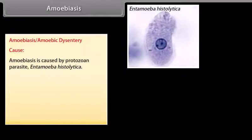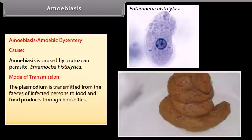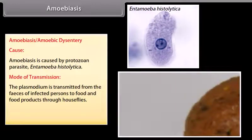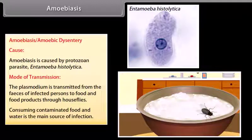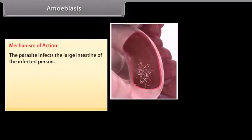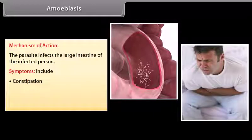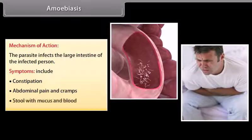Amoebiasis, or amoebic dysentery, is caused by the protozoan parasite Entamoeba histolytica. It is transmitted from the feces of infected persons to food and food products through houseflies. Consuming contaminated food and water is the main source of infection. The parasite infects the large intestine. Symptoms include constipation, abdominal pain and cramps, and stool with mucus and blood.